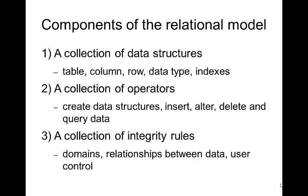So what actually is it, given that rather unhelpful definition? The relational model basically consists of three components. First, a collection of data structures that allow you to store and access your data — tables, columns, rows, data types, indices. Data structures are things that allow you to store your data or access it quicker. Second, a collection of operators that allow you to access the data in those data structures — to create the data structures, to insert, alter, delete, and query the data.